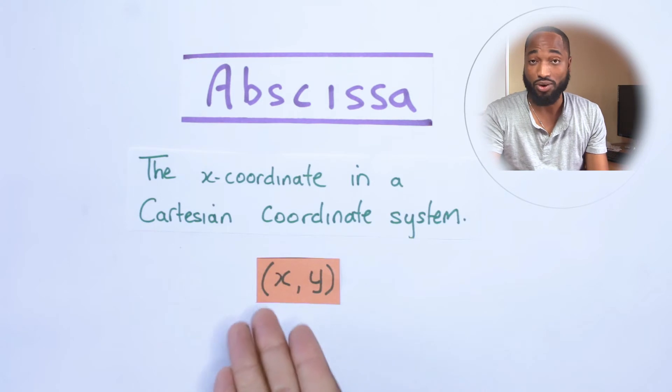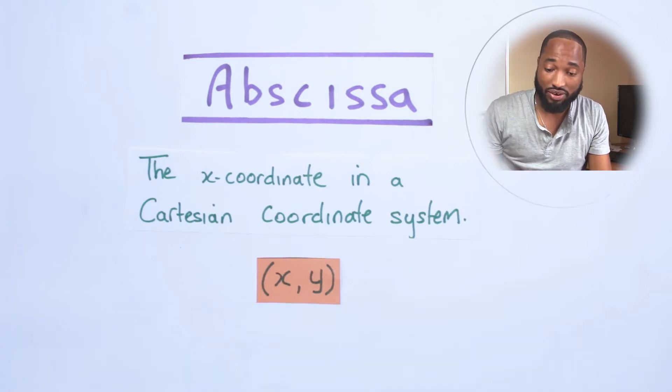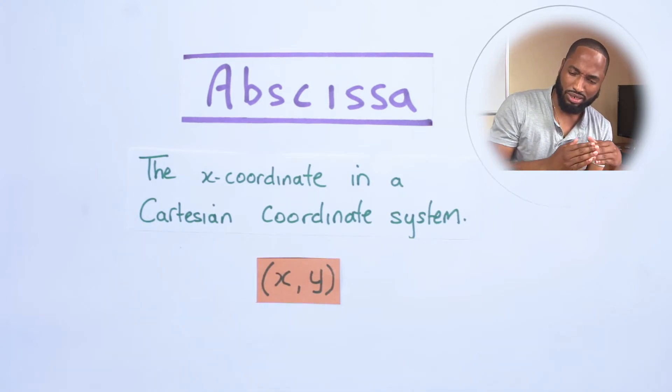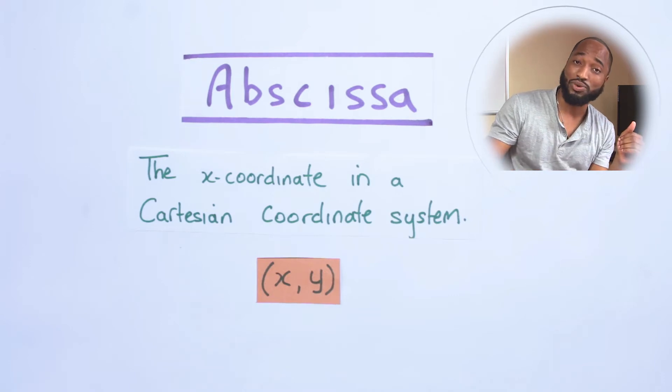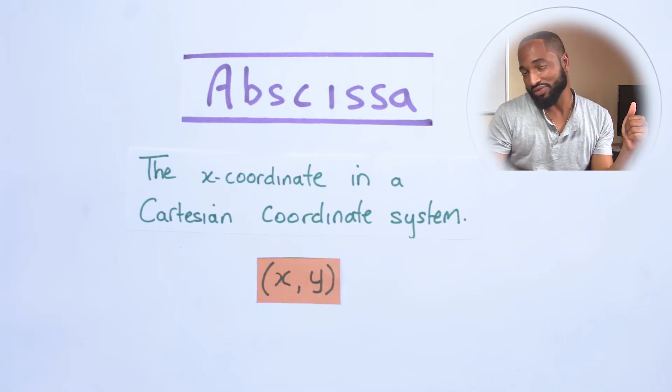That's all the abscissa is - the x value. Abscissa comes from the word meaning where does the line stop, I think that's what you would actually mean, so where does the x value stop.